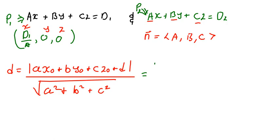So this is going to equal the absolute value of, where there is a, we put the a that we have, multiplied by x naught, our x naught is simply d1 over a. Then we say plus our b, we still put b there, then our y naught is 0, plus c, our z naught is 0.